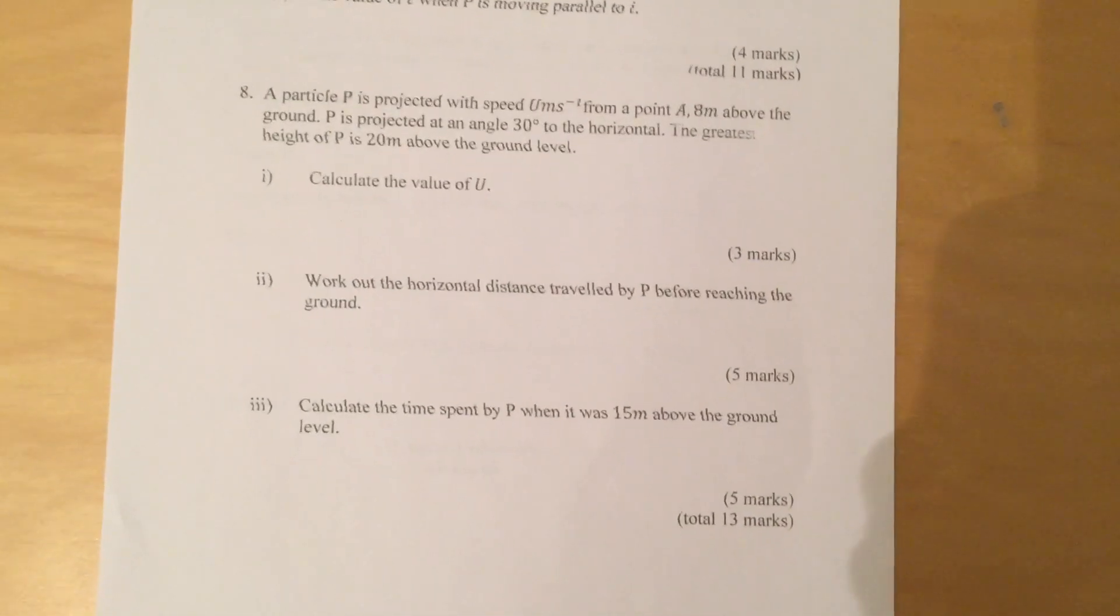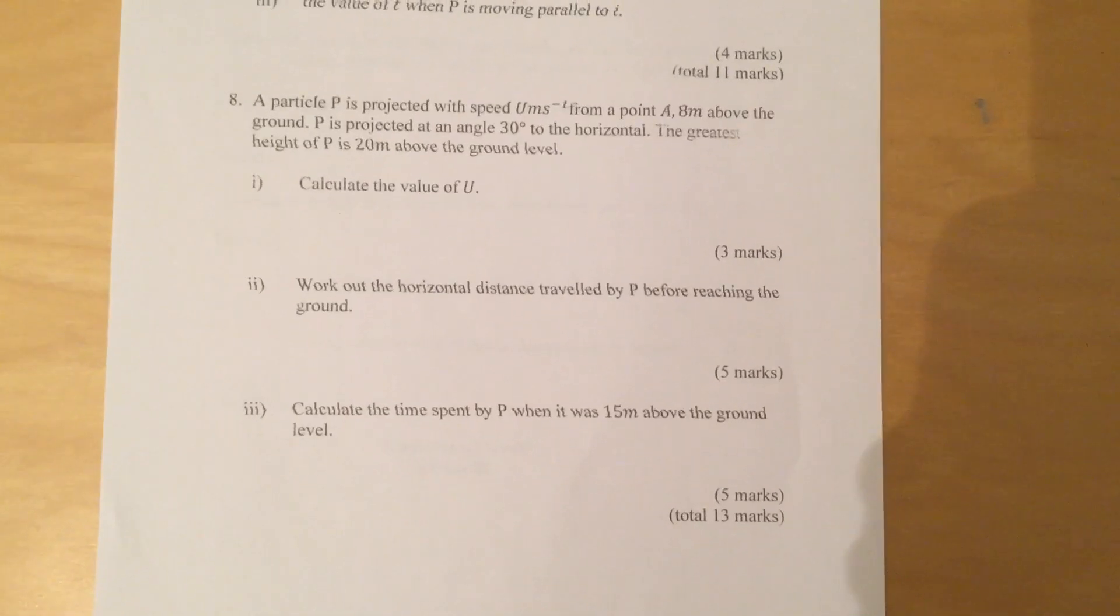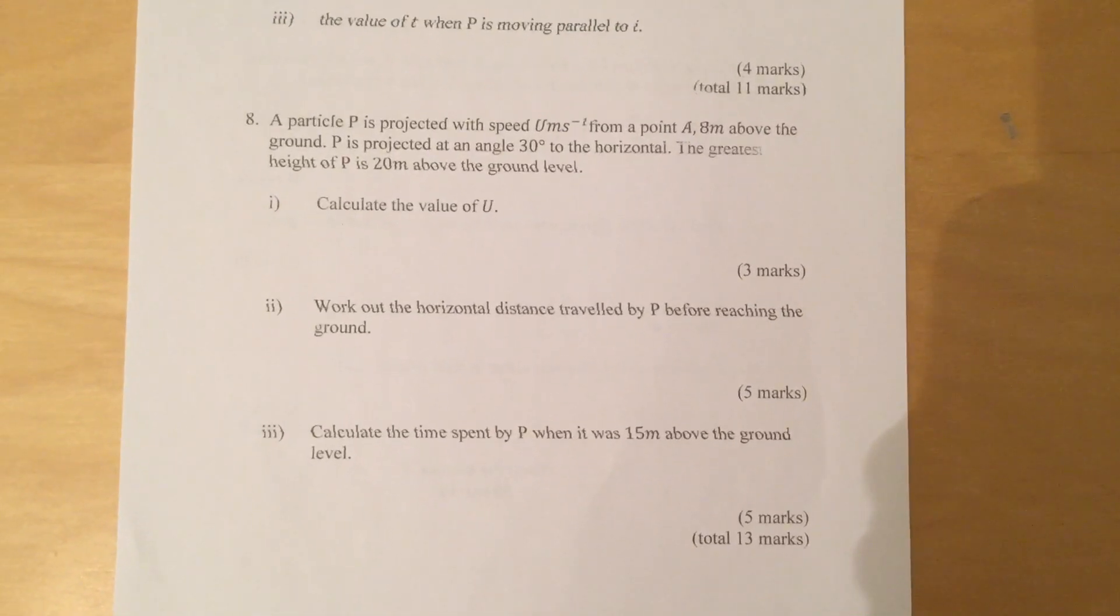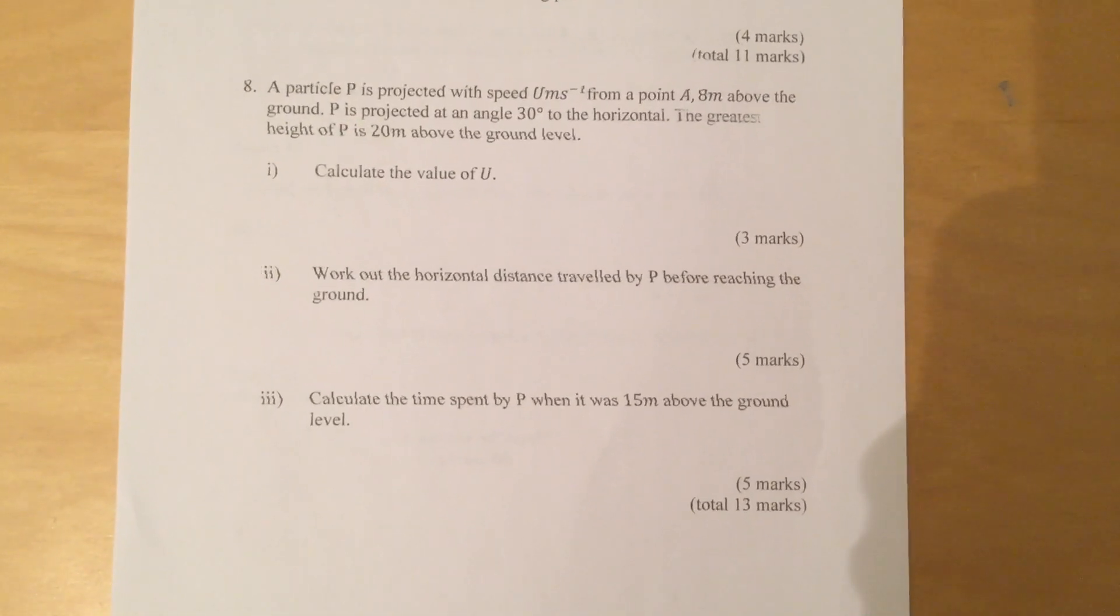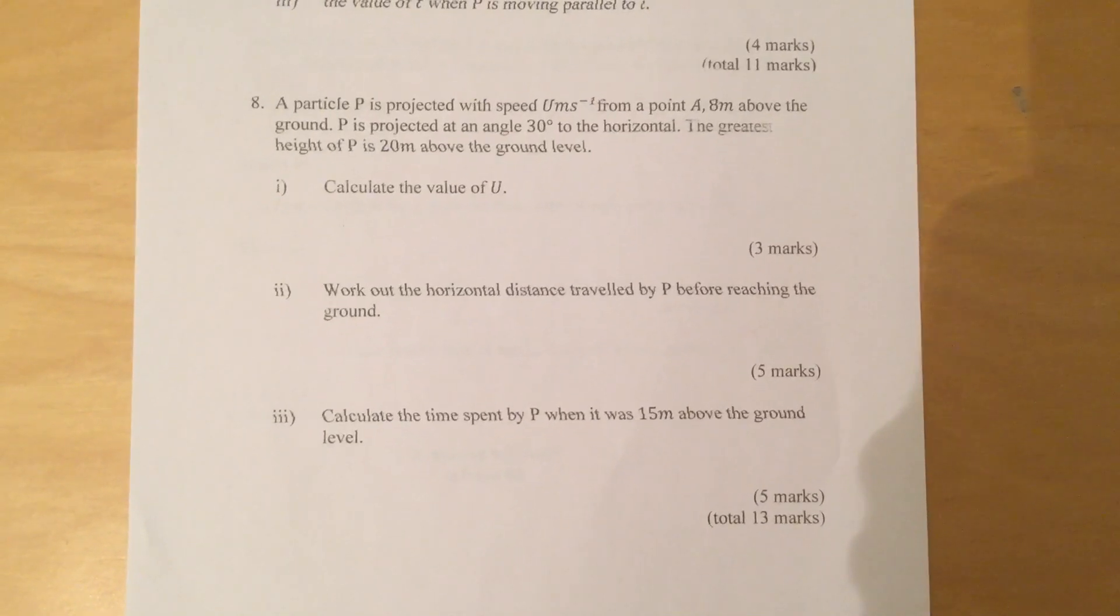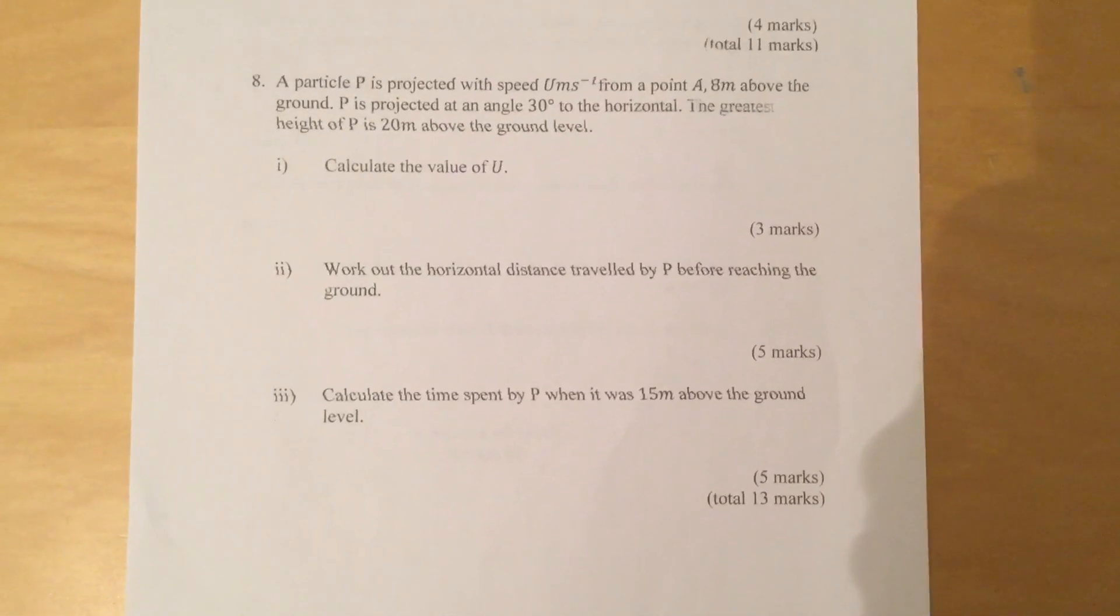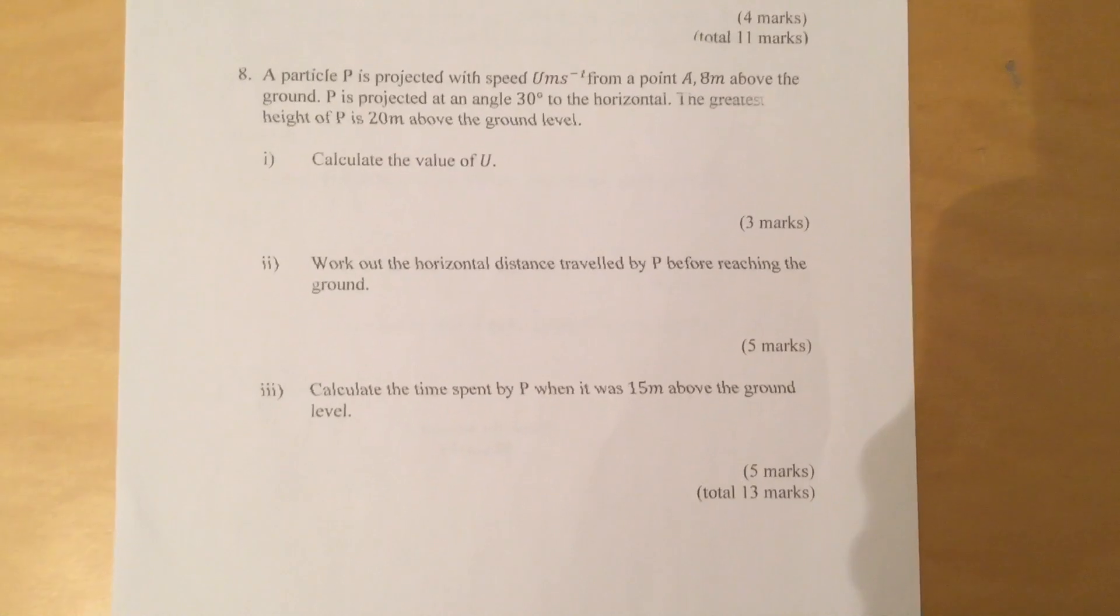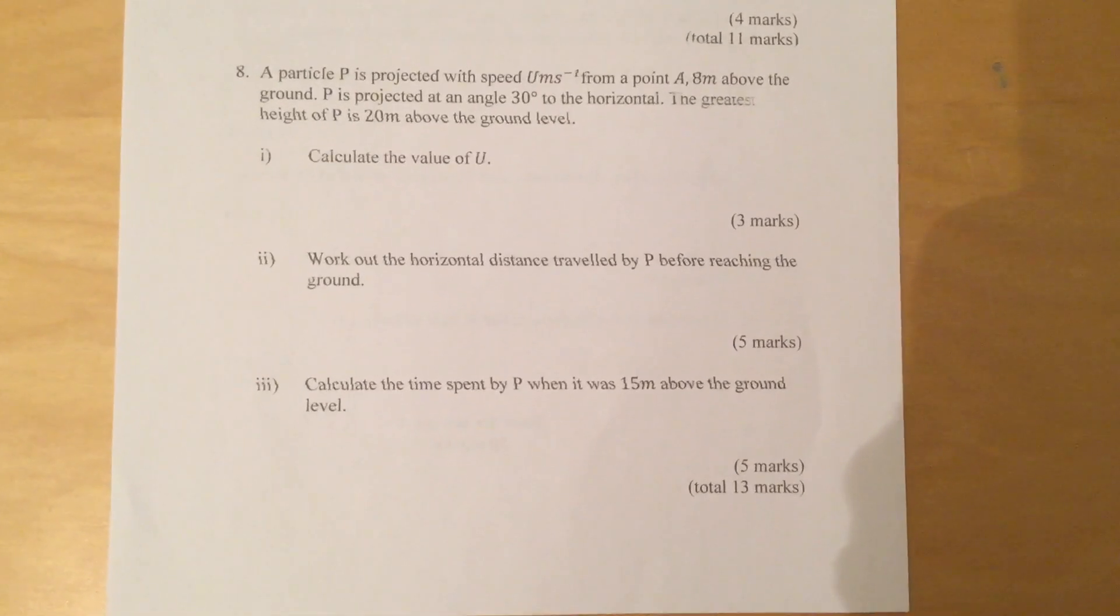Question 8: A particle P is projected with u meters per second from point A, 8 meters above the ground. P is projected at an angle 30 degrees to the horizontal. The greatest height of P is 20 meters above the ground level. Calculate the value of u.